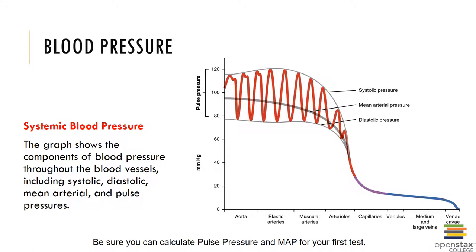At each branching of the arterial system, the arterial pressure drops as blood is pushed into ever smaller branches. At the start of the peripheral capillaries, the arterial pressure has fallen to approximately 35 millimeters of mercury. By the time blood reaches the venules, it has fallen to approximately 18 millimeters of mercury, and by the time blood reaches the vena cava, the pressure is approximately 5 millimeters of mercury. Because the pressure is so low in veins, blood tends to pool in veins, and venous flow depends on the muscular pump of skeletal muscles and the respiratory pump to keep blood moving towards the heart.